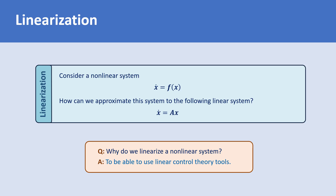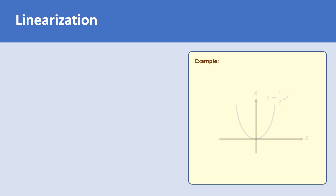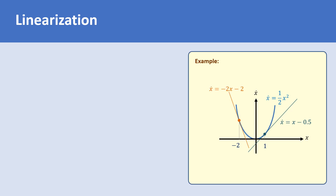For a nonlinear curve, there are a lot of points around which we can linearize a system. As an example, consider the nonlinear system x dot equals x squared over 2. If we linearize this system around the point x equals 1, then the linear approximation of the system is x dot equals x minus 0.5. But if we linearize the system around x equals minus 2, the linear approximation is x dot equals minus 2x minus 2.